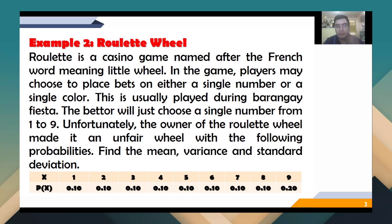So another one, what if it involves the variance and the standard deviation? Roulette is a casino game named after the French word meaning little wheel. In the game, players may choose to place bets on either a single number or a single color. This is usually played during a barangay fiesta. So the bettor will choose a single number from 1 to 9. Unfortunately, the owner of the roulette wheel made it unfair with the following probabilities. So there are 9 probabilities. So what do we need to do?